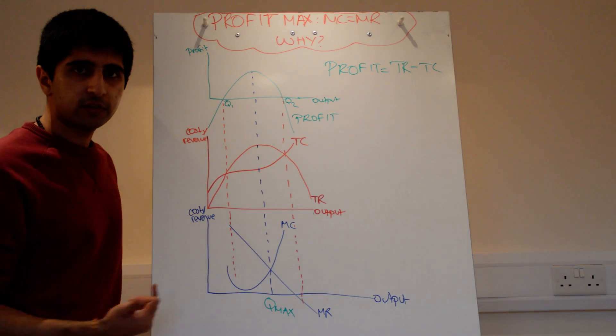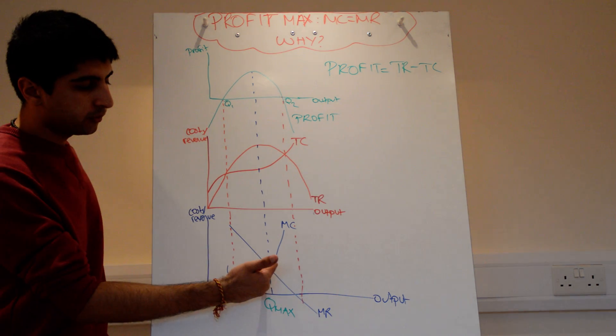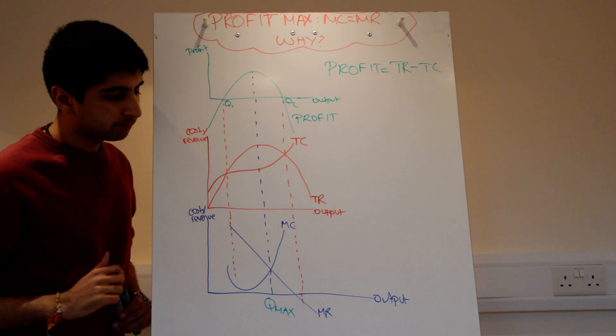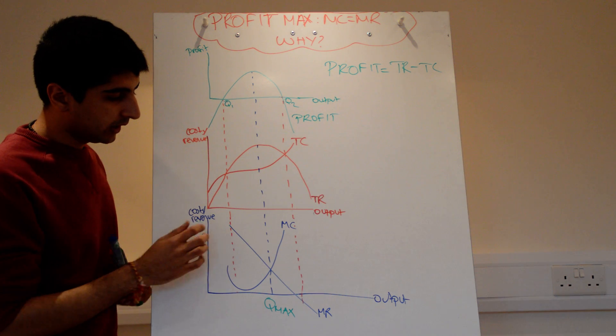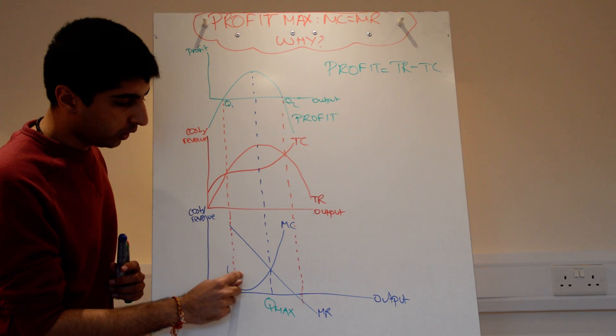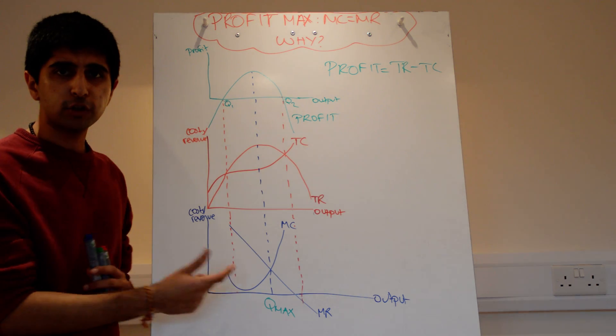What about any points to the left? Why can't any points to the left of MC equals MR be profit maximisation? Again, let's look carefully. Let's pick where my finger is, this point here. Why do we produce there? MR is much greater than MC.